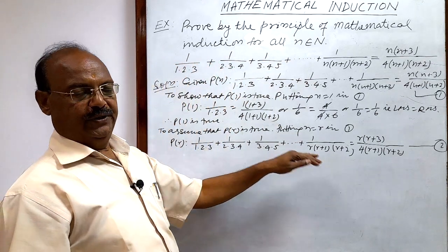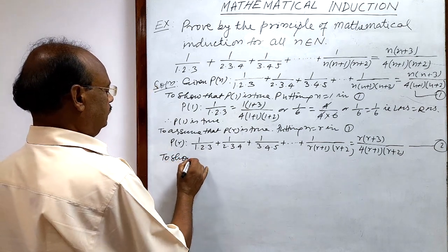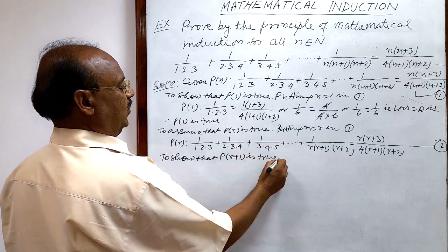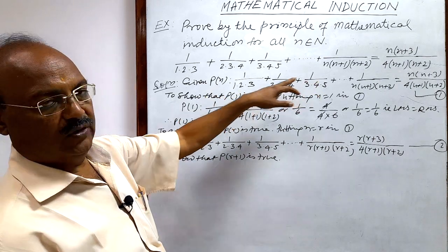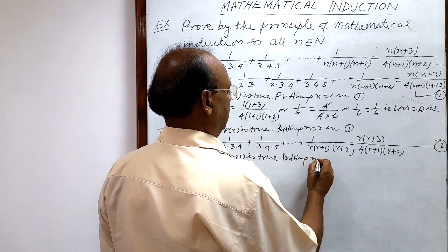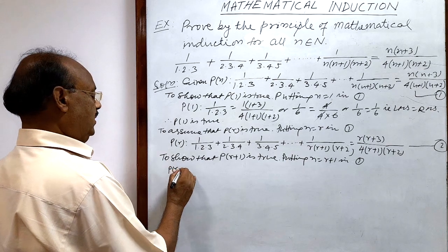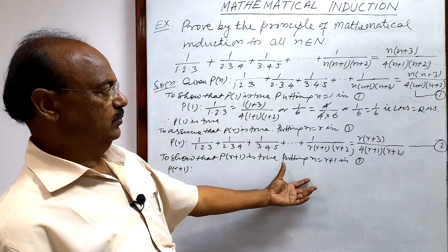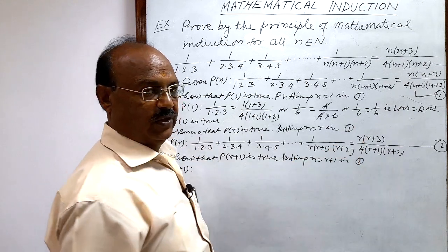In the third and last step, we have to show that P(r+1) is true. We get P(r+1) by putting n = r+1 in relation number 1. The total number of terms will be r+1; up to now we have taken r terms and we need to take one more term.